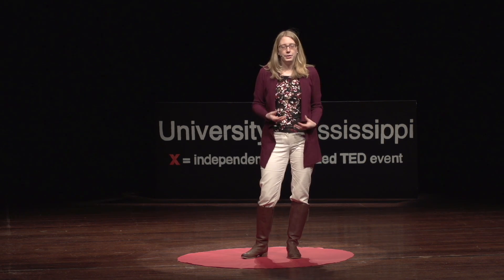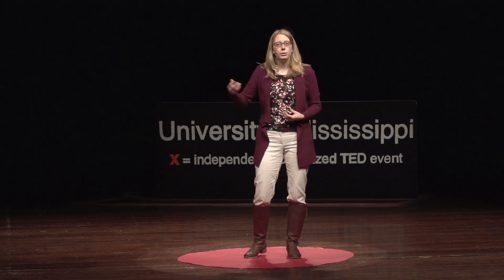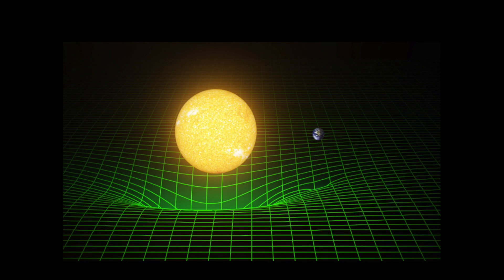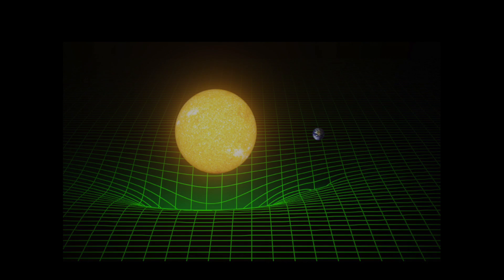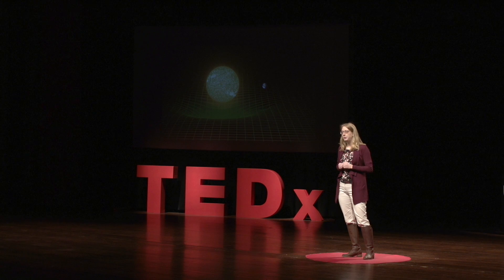Now, when objects, when matter such as the earth, or a black hole, or our sun, move around in this space-time, they disturb the space-time, and they create ripples, much like what you would see if you were to toss a pebble into a pond. These emanating ripples are the gravitational waves.